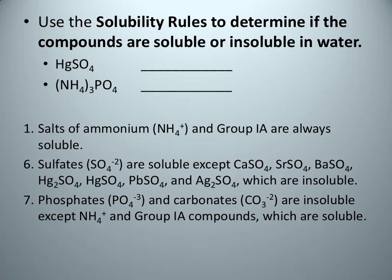We're going to practice looking up a couple of compounds before we start looking at the double replacement reactions. First, we're going to start with mercury(II) sulfate. We're going to be looking at rule number 6 for sulfates. Most of the rules deal with the anions in the compounds. Rule 6 says that sulfates are soluble except for a few exceptions, and mercury sulfate is one of them — those exceptions are insoluble. So if this was a product in a double replacement reaction between two aqueous solutions, this would be our precipitate.